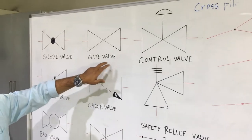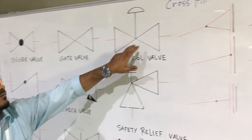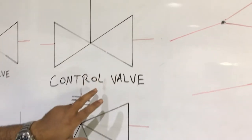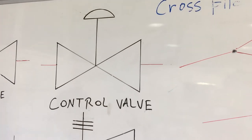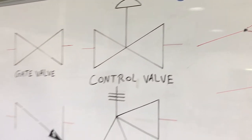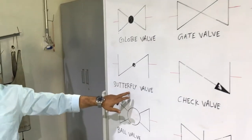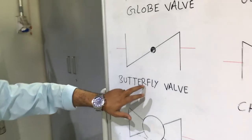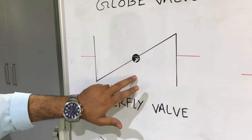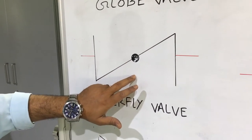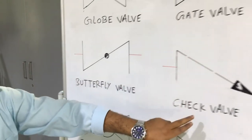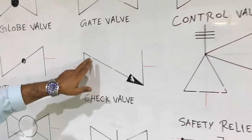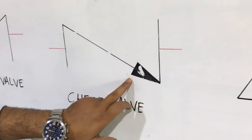This one we have the control valve; the symbol of control valve is like this. Now we will go here to butterfly valve — we have also here butterfly valve, and the symbol is this one. And this one we have check valve; see, this is the symbol of check valve.